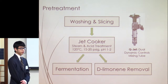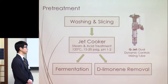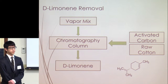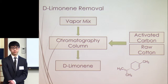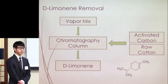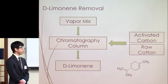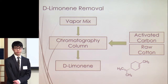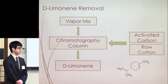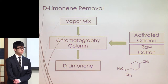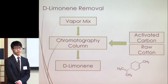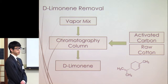Coming out of the jet cooker, we have two streams. One is a slurry mix fed to the fermentation reactor. The other is a vapor mix containing D-limonene, a compound found in orange peels and other citrus peels. It's removed for two major reasons: first, it's a valuable byproduct that can be recovered and sold, especially to the cosmetic industry where it's widely used for fragrances. More importantly, it can inhibit downstream enzyme activity, so by removing it here we increase our overall process yield. The vapor mix is condensed and sent through a chromatography column packed with activated carbon and raw cotton to separate out the hydrophobic limonene.